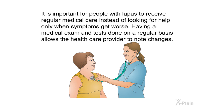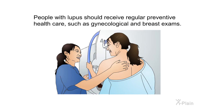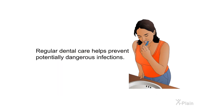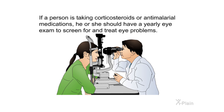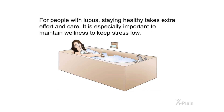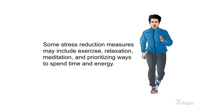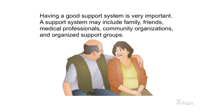It is important for people with lupus to receive regular medical care instead of looking for help only when symptoms get worse. People with lupus should receive regular preventive health care such as gynecological and breast exams. Regular dental care helps prevent potentially dangerous infections. If a person is taking corticosteroids or anti-malarial medications, they should have a yearly eye exam to screen for and treat eye problems. Maintaining wellness and keeping stress low is especially important — stress reduction measures may include exercise, relaxation, meditation, and prioritizing ways to spend time and energy.